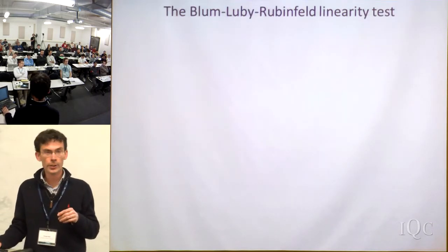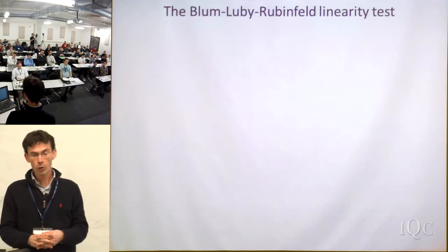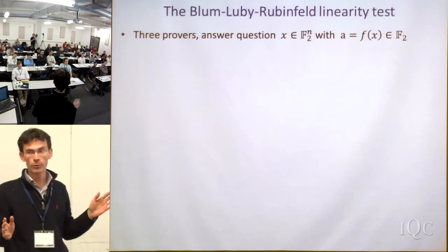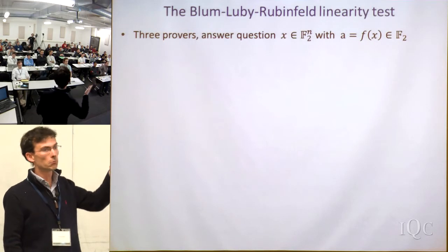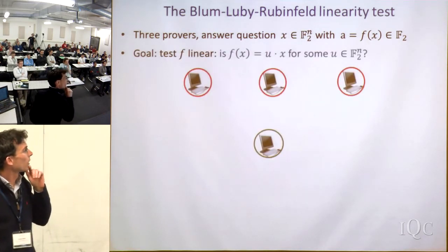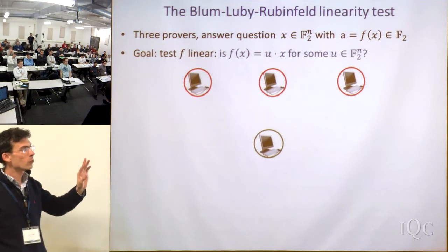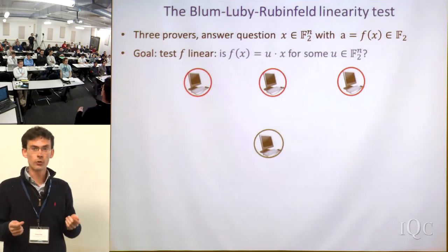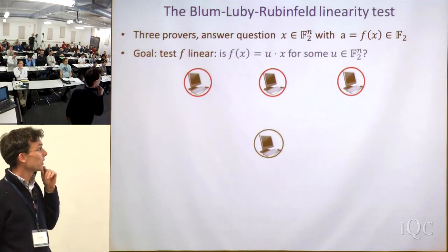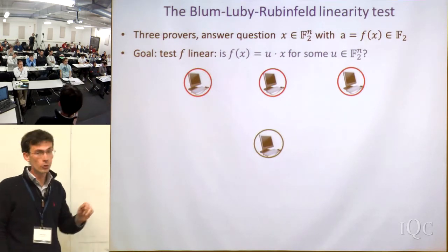The linearity test was introduced by Blum, Luby, and Rubinfeld in the setting of interactive proofs. It's a fundamental idea useful for the PCP theorem and hardness of approximation. The setting: three provers, questions from F_2^n — bit strings — and answers are just bits. Assuming they apply the same function, the goal of the test is to check that the function is linear, meaning it's just a dot product with some secret string U.